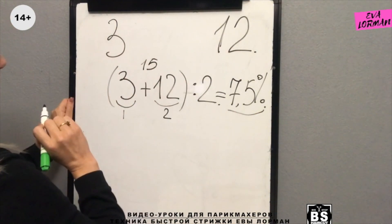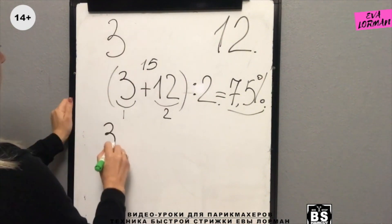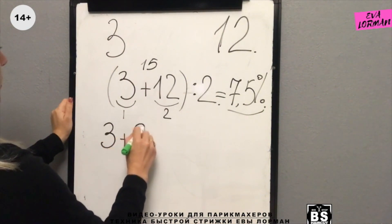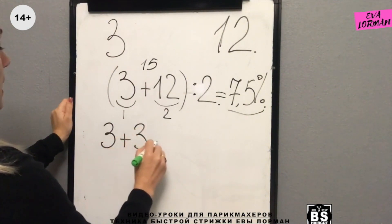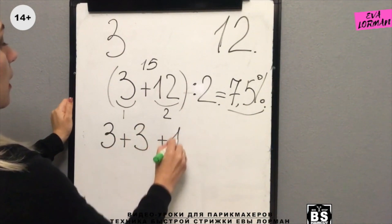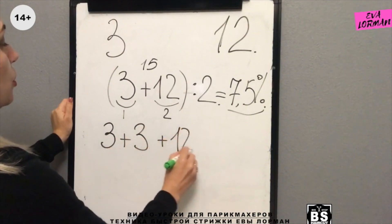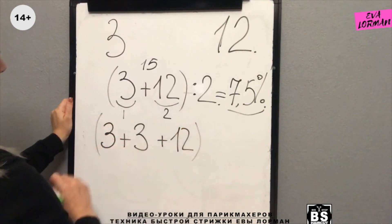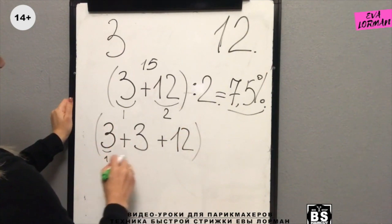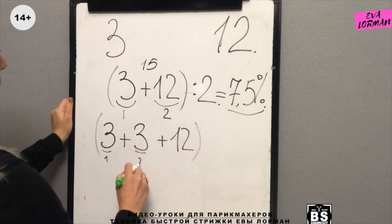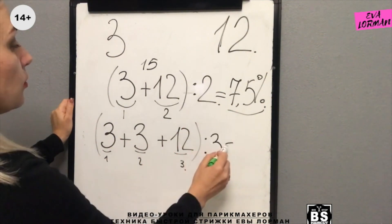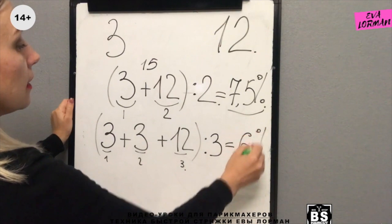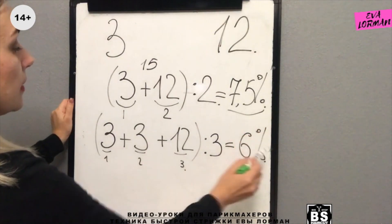What else can we get from them? Take 2 parts of 3% plus 1 part of 12% and divide by 3. Why by 3? Because there are 3 parts. We get 6%. Great.